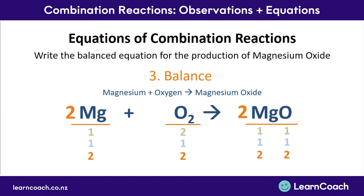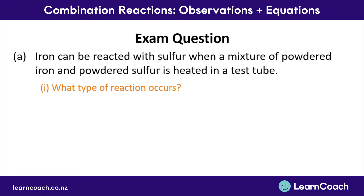The key things to remember about equations for combination reactions are: make sure you know the word equation, write out the symbol equation, and make sure it is balanced so that the same number of atoms of each element appears on both sides of the equation.